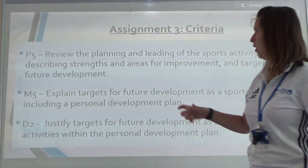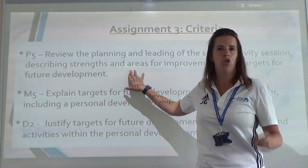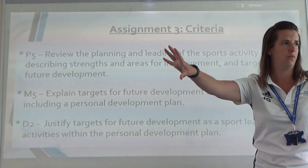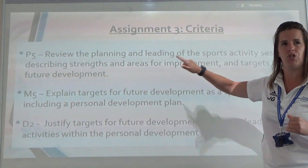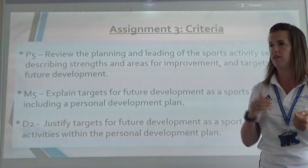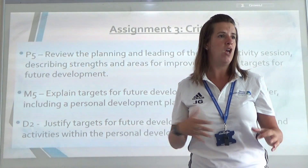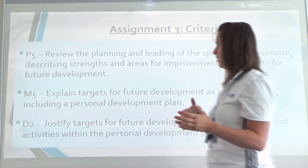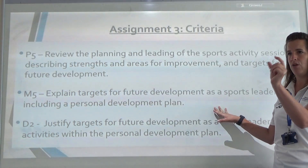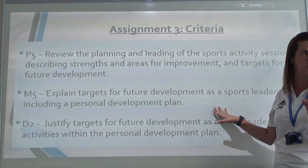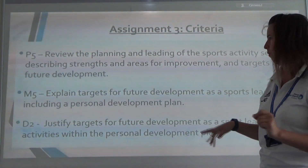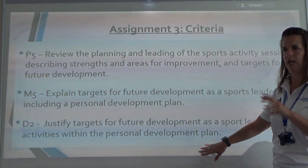Assignment three: the last criteria is your evaluation - reviewing your planning and leading. How well did the planning go and how well did the leading go? My suggestion would be that in the planning session you put together a questionnaire to give to your Year 7 students, asking what they enjoyed and what could be improved, so you've got feedback from them. You will do a personal development plan - what targets would you set yourself, and how could you reach those targets for the next time you taught it? The distinction part is to justify those targets.